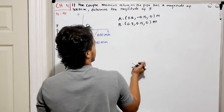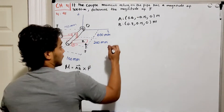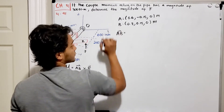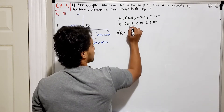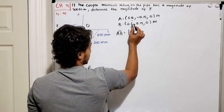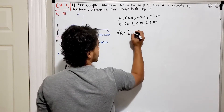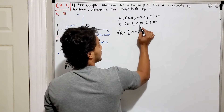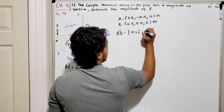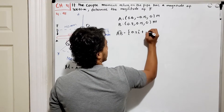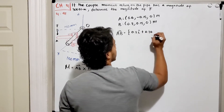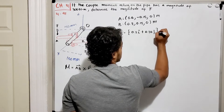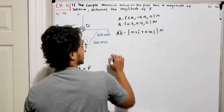To find the distance vector AB, I do B minus A. So: 0.8 minus 0.6 gives me 0.2 in the i-direction. In the y-direction, 0.15 minus (negative 0.15) gives me positive 0.30 in the j-direction. In the z-direction, 0 minus 0 gives me 0. So I have my distance vector AB.